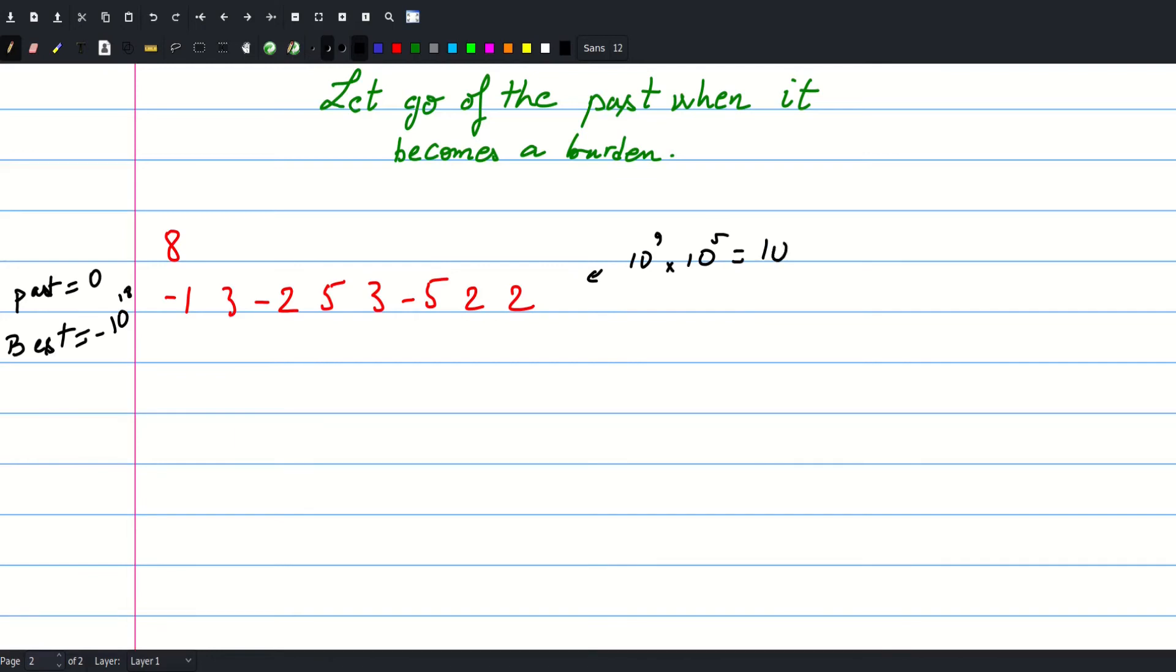Because remember these values can go up to 10 to the 9th and we have 10 to the fifth of them so the sum would be up to 10 to the 14th so we need to use long longs here. And the algorithm as we said works in the following way: we start at this negative one and then we check out what is our past so far.